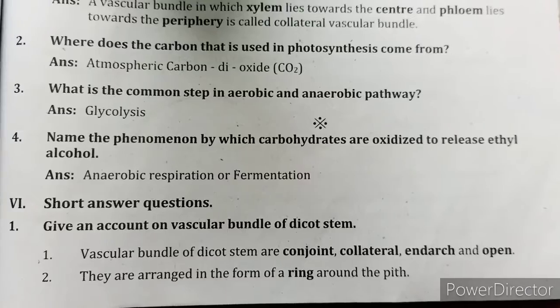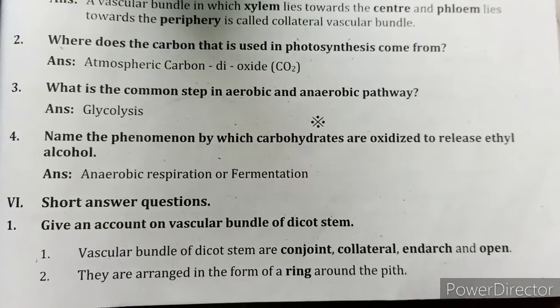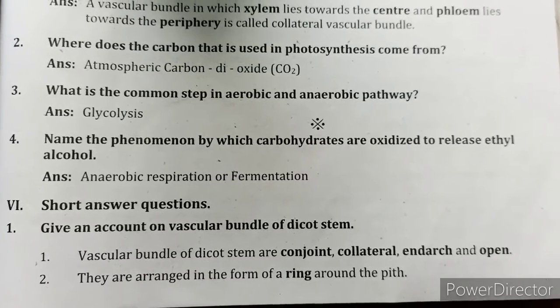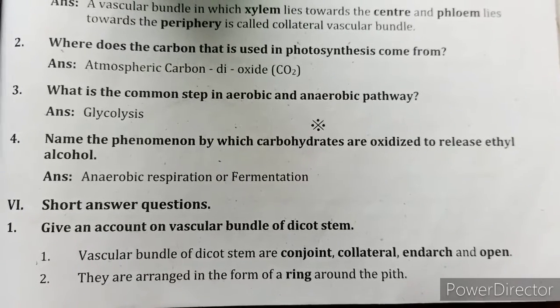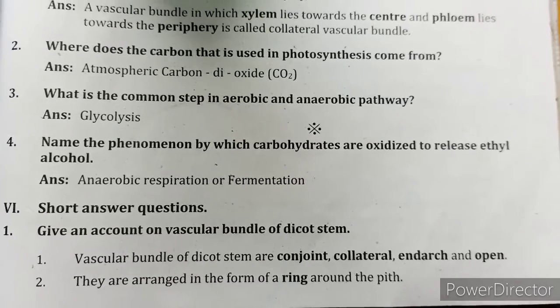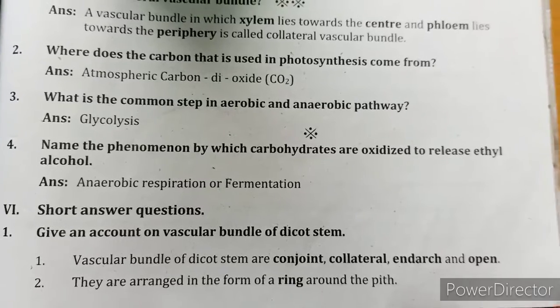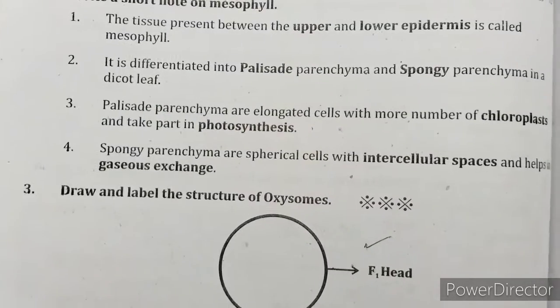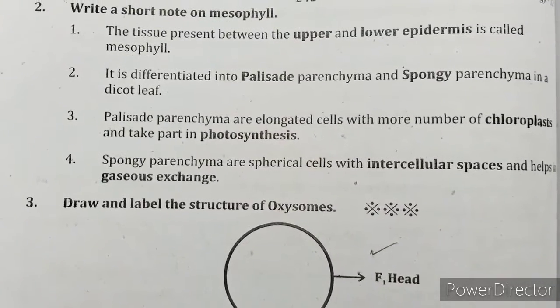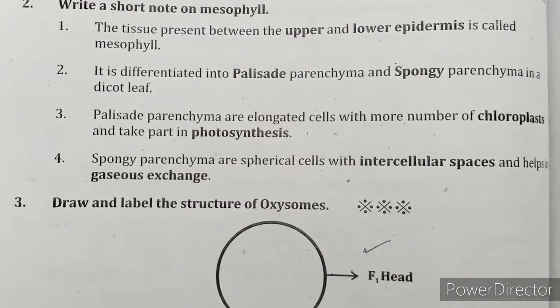Short answer question: Give an account on the vascular bundle of dicot stem. The vascular bundles of a dicot stem are conjoint, collateral, interspersed, and open. They are arranged in the form of a ring around the pith.